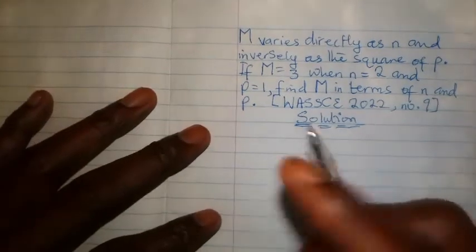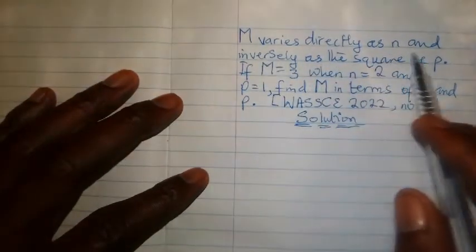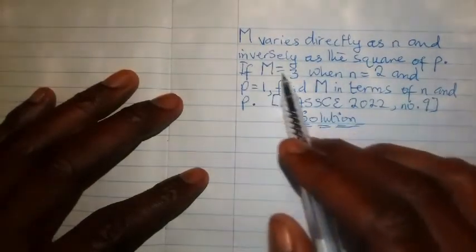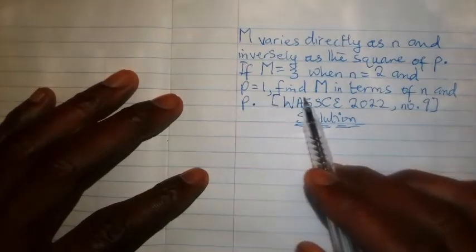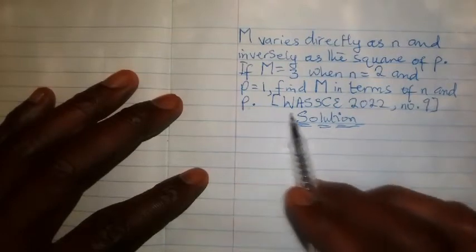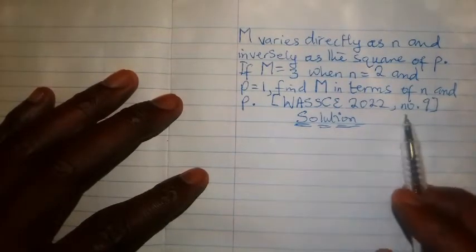at hand. Here the question says: m varies directly as n and inversely as the square of p. If m = 3 when n = 2 and p = 1, find m in terms of n and p. This is a WASSCE 2022 question, number 7. Now how do we approach this problem? First,